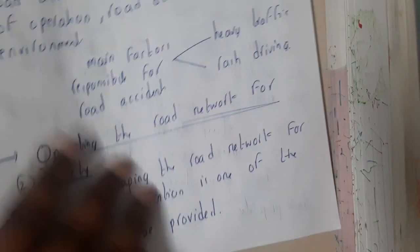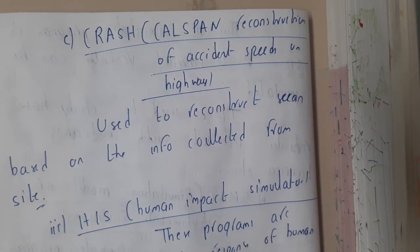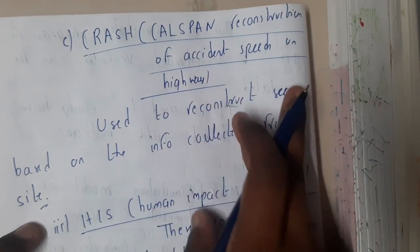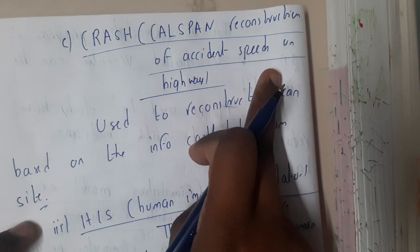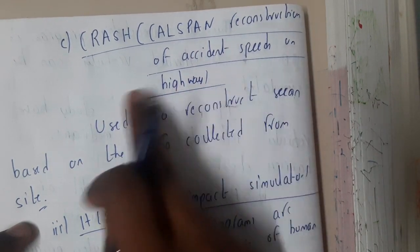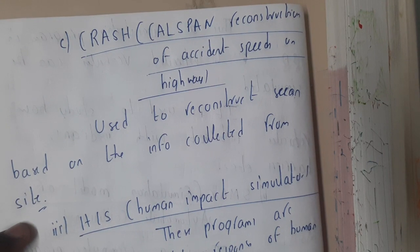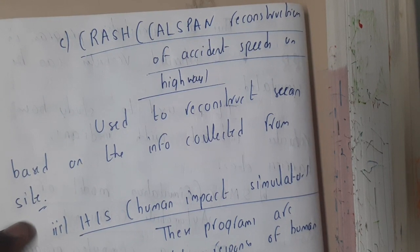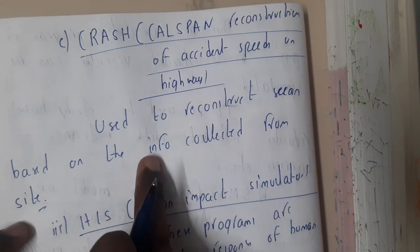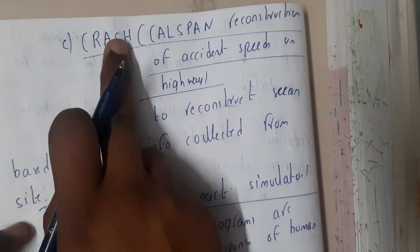One more method is CRASH — Calspan Reconstruction of Accident Speeds on Highway. This is used on highways and high-traffic areas where there is a high chance of accidents. Using this method, the accident is reconstructed based on recorded values.